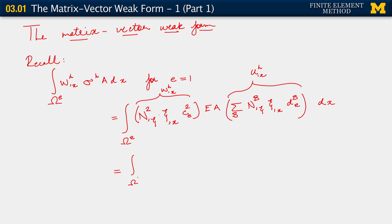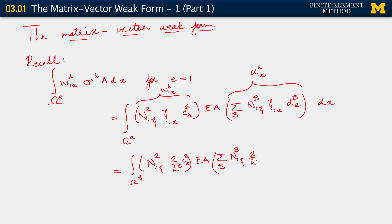We take our approach of going to the bi-unit domain to write out this integral. From that, we get the integral over omega_xi. The first factor is N2,xi, and we have C_xi,x which is simply 2 over H_E. We have C_2^E times E times A. For U_H,x, we have N_B,xi times C_xi,x, using 2 over H_E for that as well, times D_B^E.